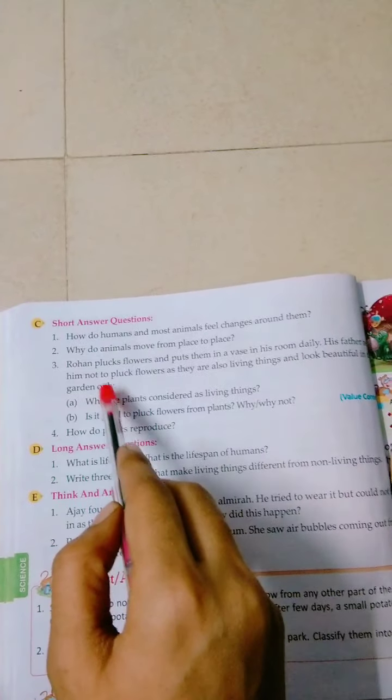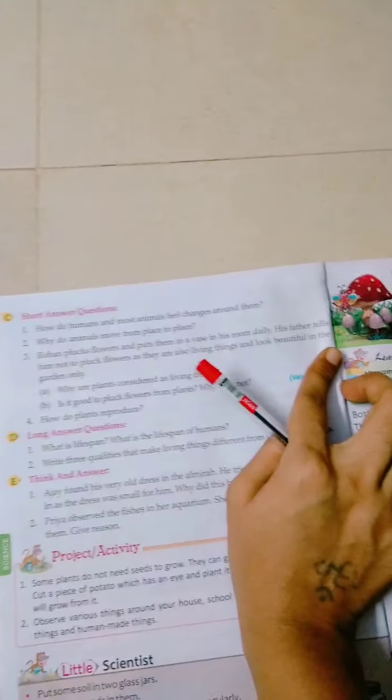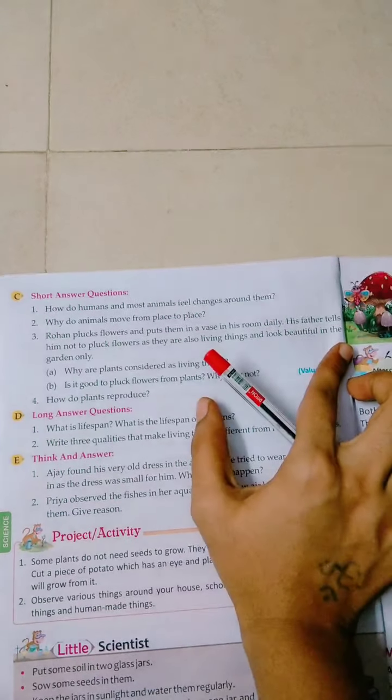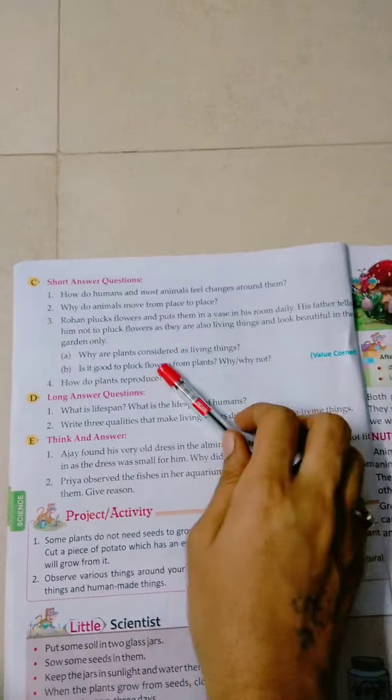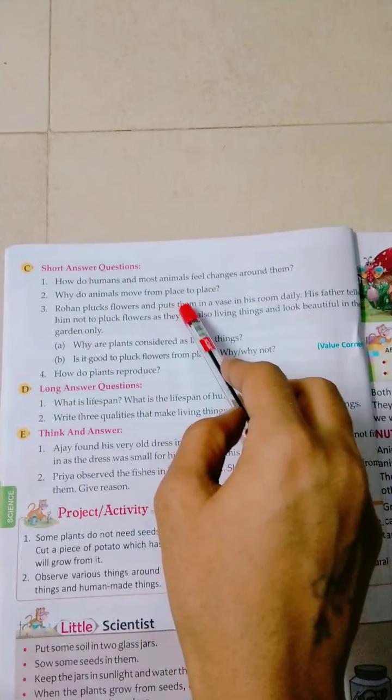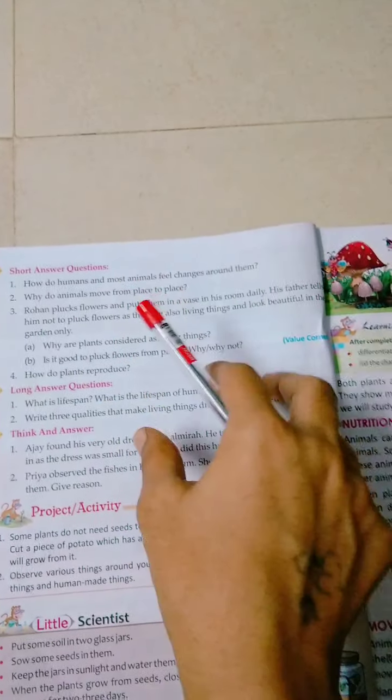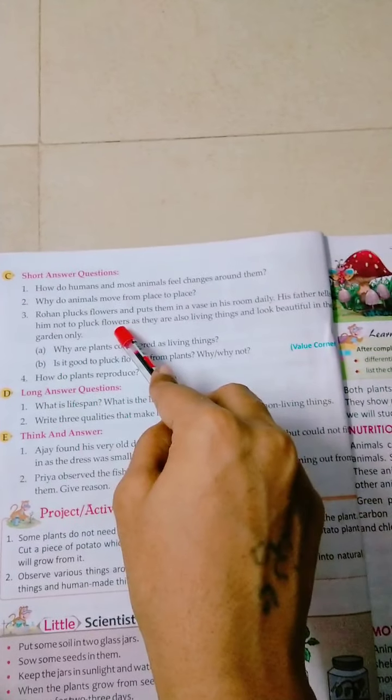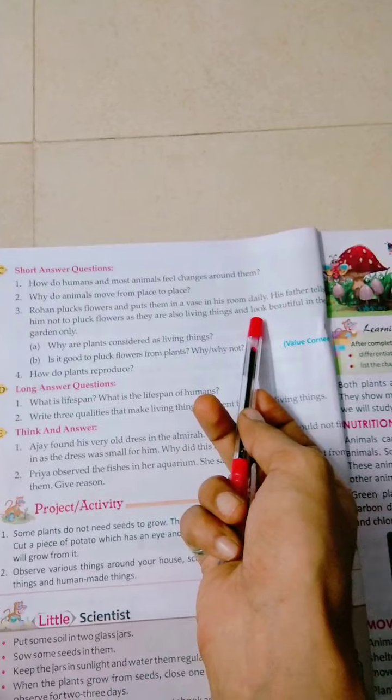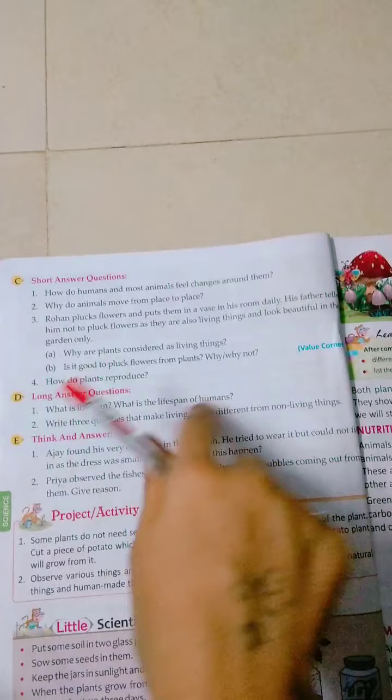Next question: Rohan plucks flowers and puts them in a vase in his room daily. His father tells him not to pluck flowers as they are also living things and look beautiful in the garden only. This is saying that Rohan always used to pluck flowers so he could keep them in a vase in his room. His father advised him that he shouldn't pluck flowers daily. They are also living things, they also have life. They always look beautiful in the garden.